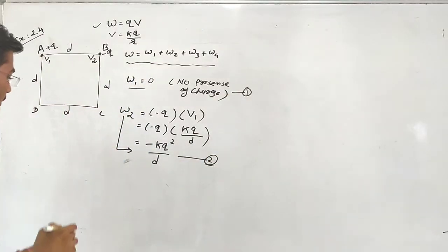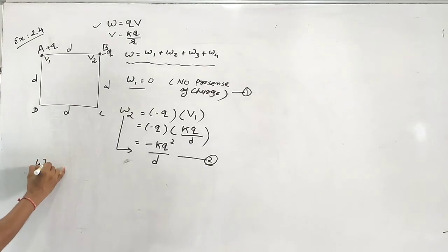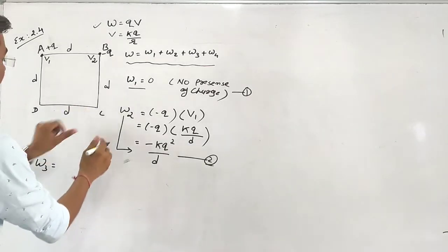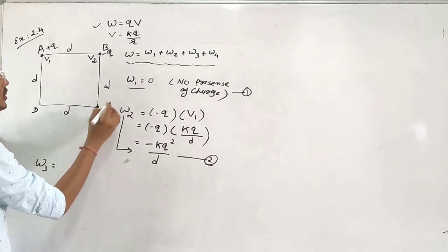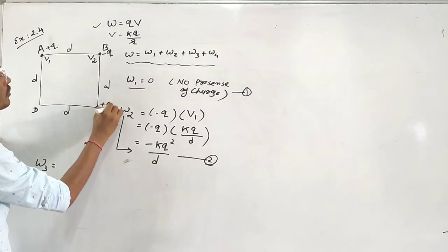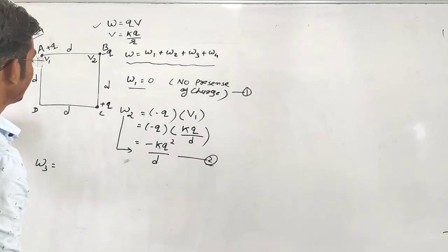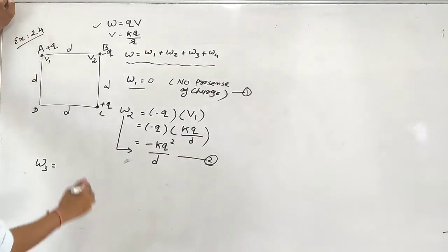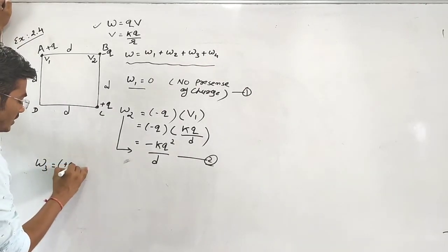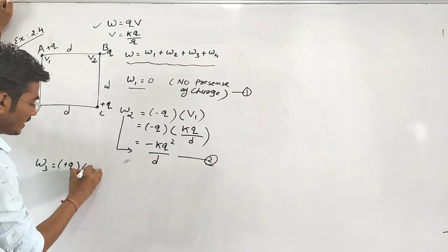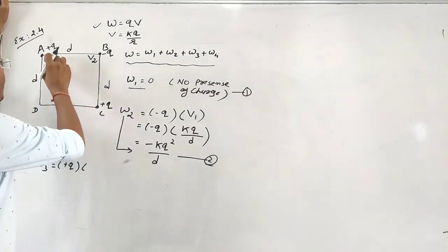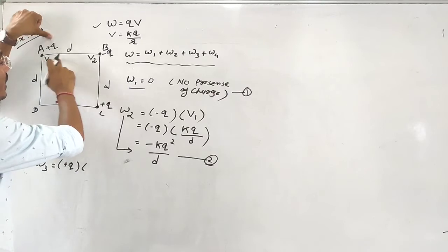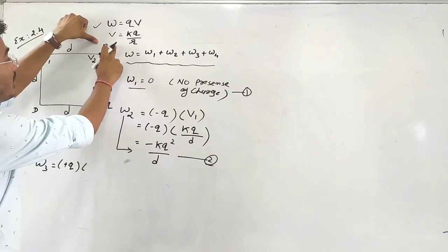Then, for W3, at point C we have to place a positive charge Q. At this point, charges are already available: plus Q at point A and plus Q at point B — giving potentials V1 and V2 at point C.